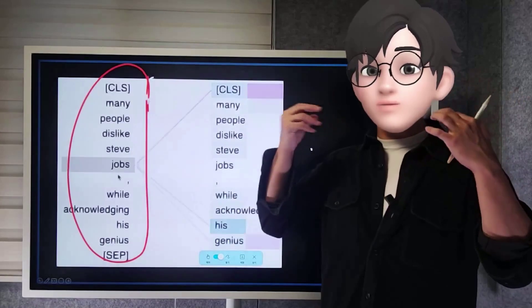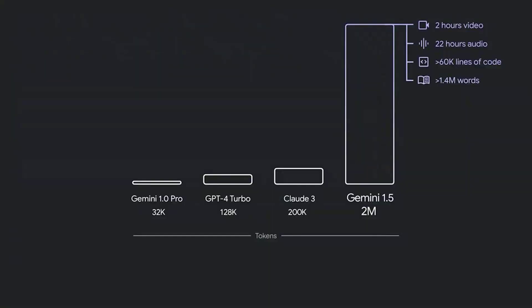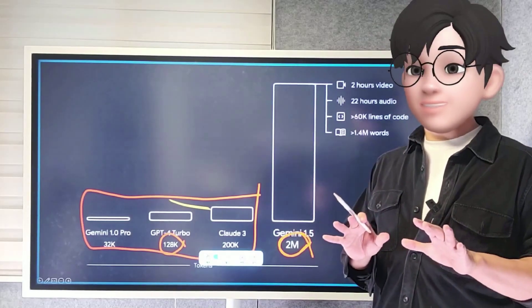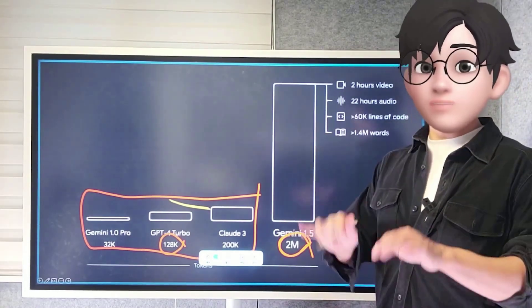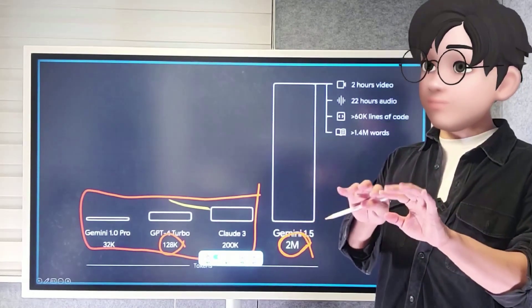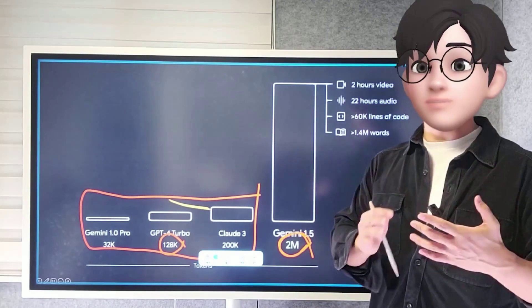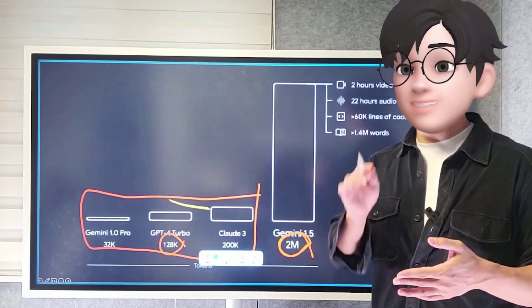When too much information floods in, we tend to remember only what sticks and forget the rest. So, when Gemini 1.5 was launched, the big deal was that it could process up to 2 million tokens at once. Previously, models like GPT-4 could only manage about 128,000 tokens. Gemini drastically increased this limit, which is fantastic. However, if you go beyond this, it starts to lose track of the earlier information. So, when we use something like ChatGPT for fun and input dozens of entries, it cannot remember the previous ones. It would be great if it could remember my entire history, but the structure of existing transformer models makes that impossible. That is one of their limitations.